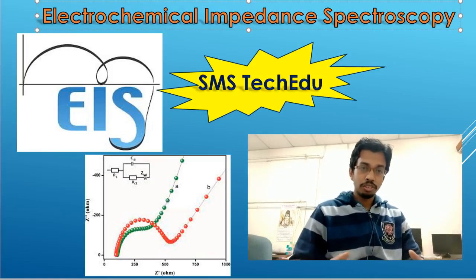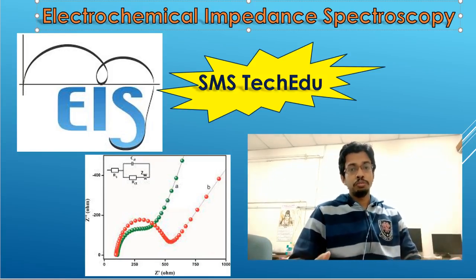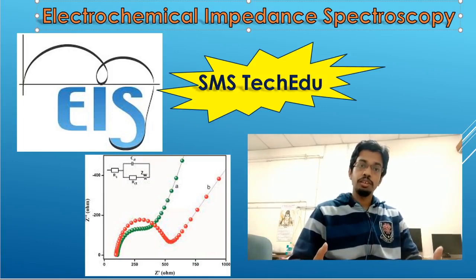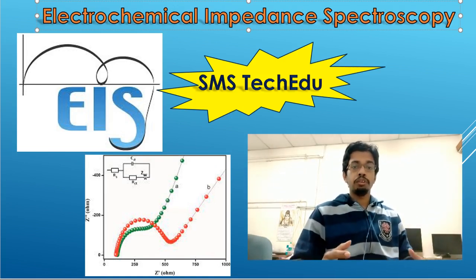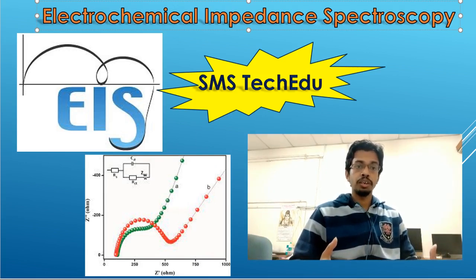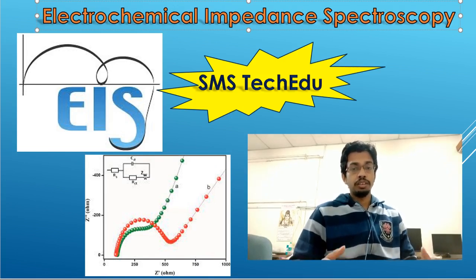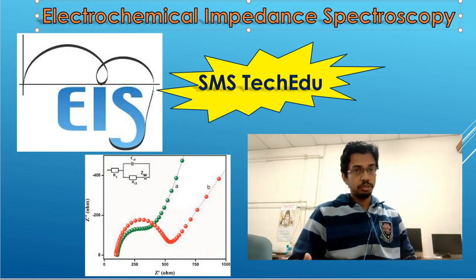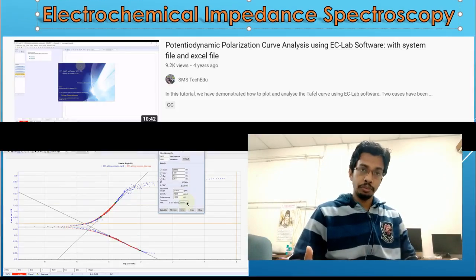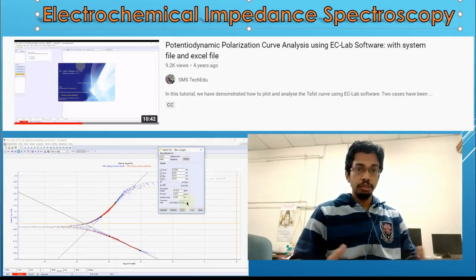Hello everyone, welcome to our channel SMS. Today's video is about EIS — Electrochemical Impedance Spectroscopy. EIS is a powerful technique that utilizes a small amplitude alternating current signal to probe the impedance characteristics of a cell. The AC signal is scanned over a wide range of frequencies to generate an impedance spectrum. EIS is useful in different research fields like batteries and corrosion.